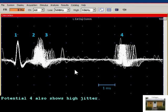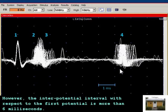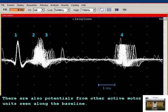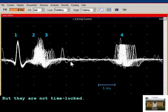Potential 4 also shows high jitter. However, the inter-potential interval with respect to the first potential is more than 6 milliseconds. We cannot see blocking in this display. There are also potentials from other active motor units seen along the baseline, but they are not time-locked.